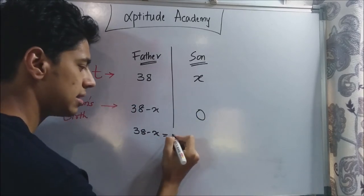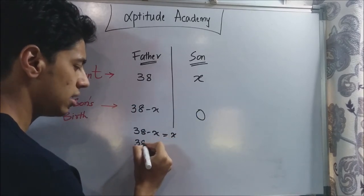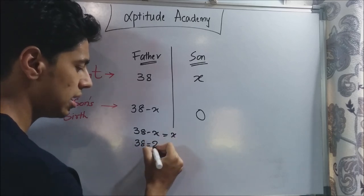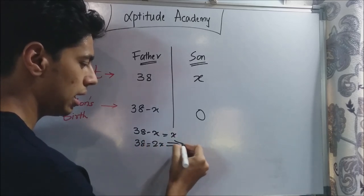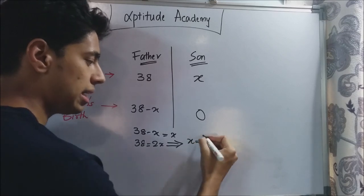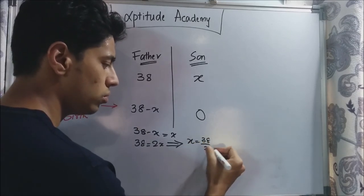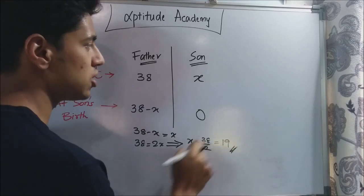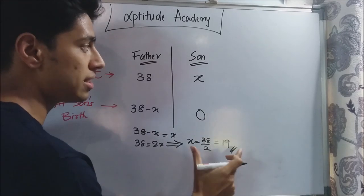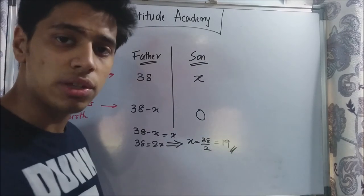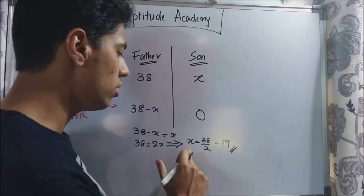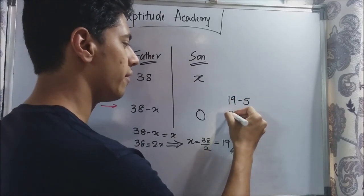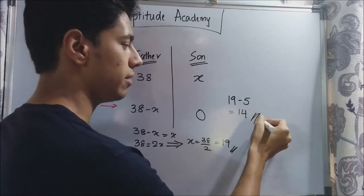So the equation is: 38 minus x equals x, which gives us 38 equals 2x, so x equals 19. The son's current age is 19. But they've asked for the son's age five years ago, which is 19 minus 5, so the answer is 14.